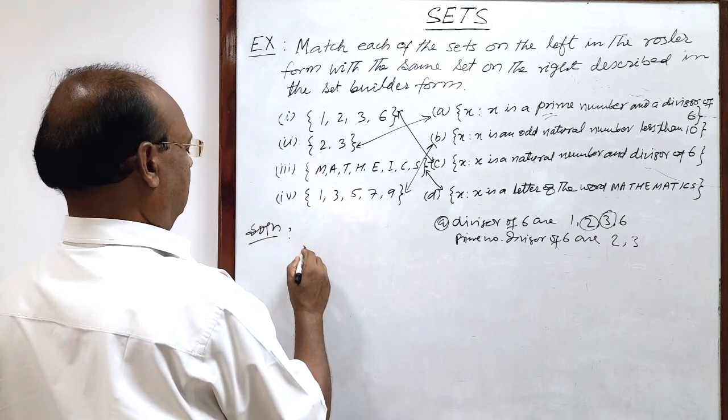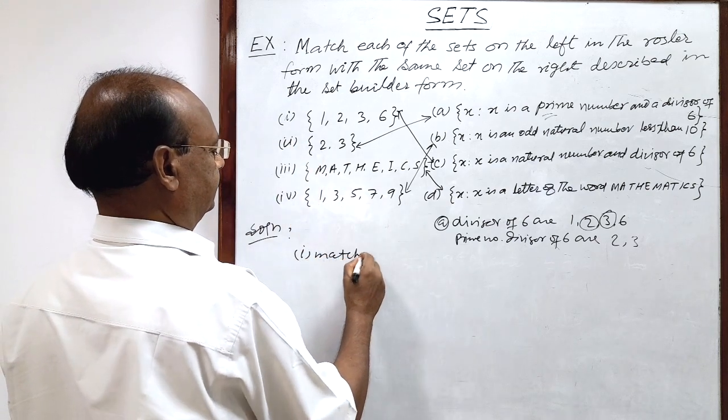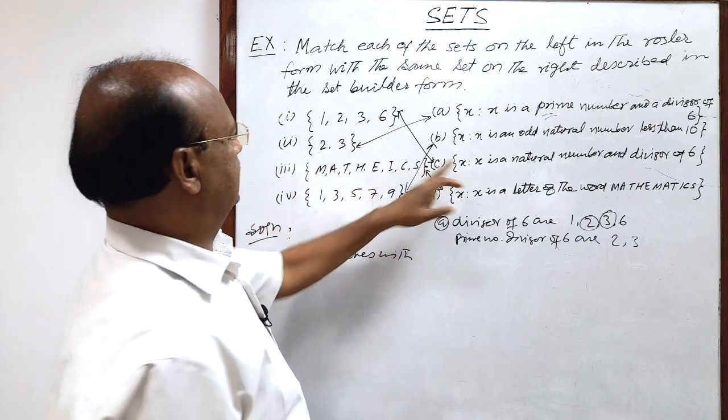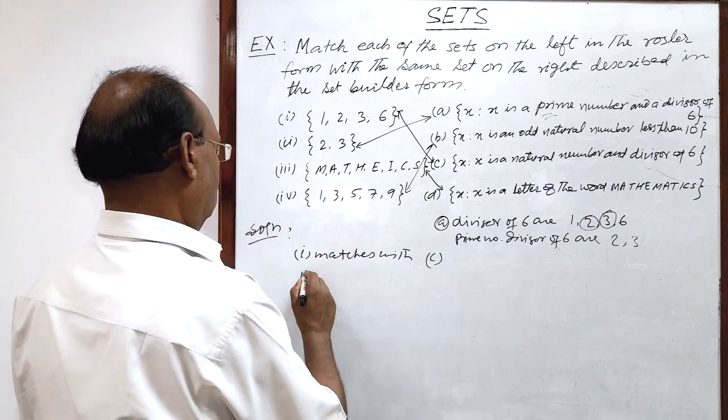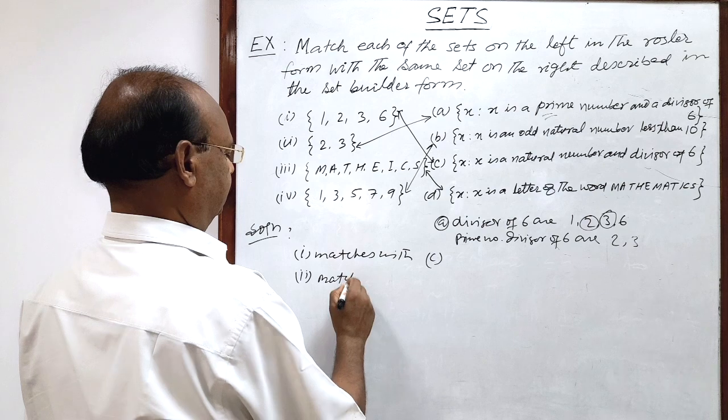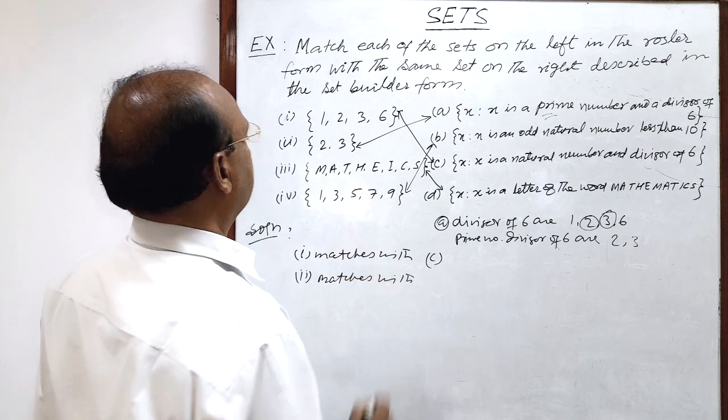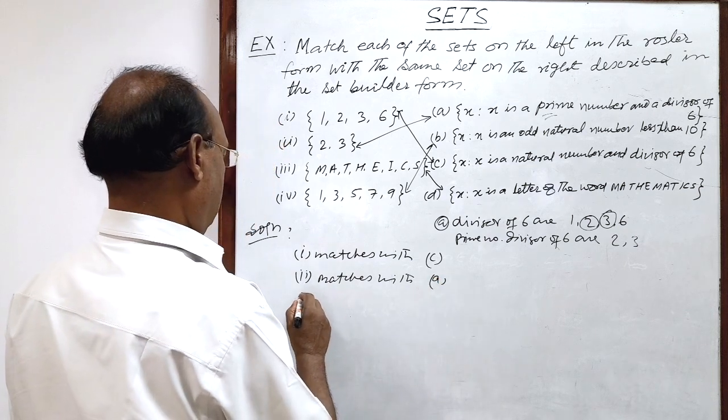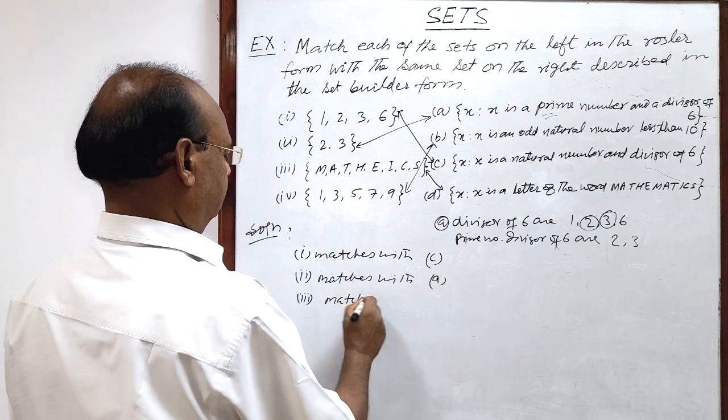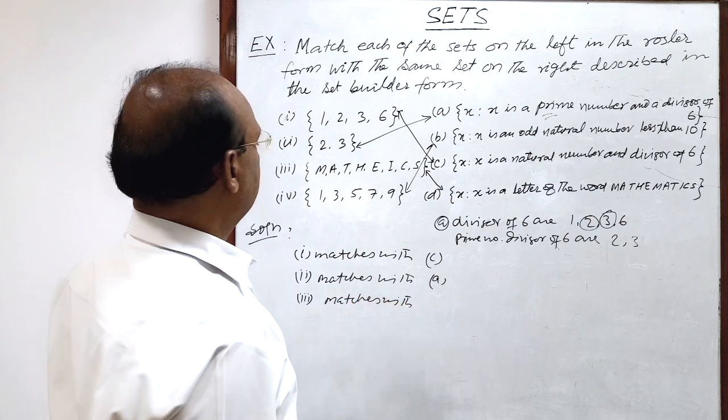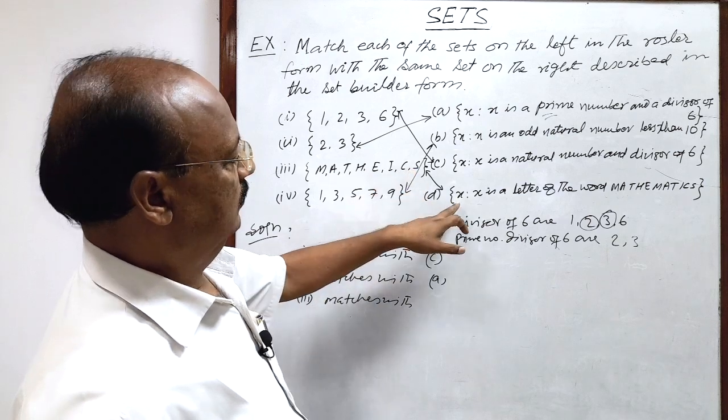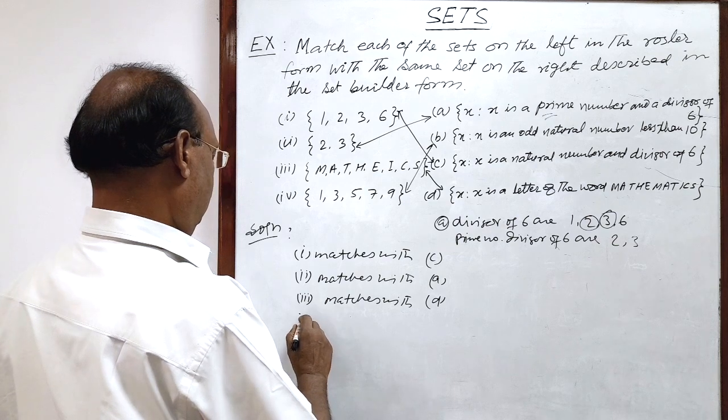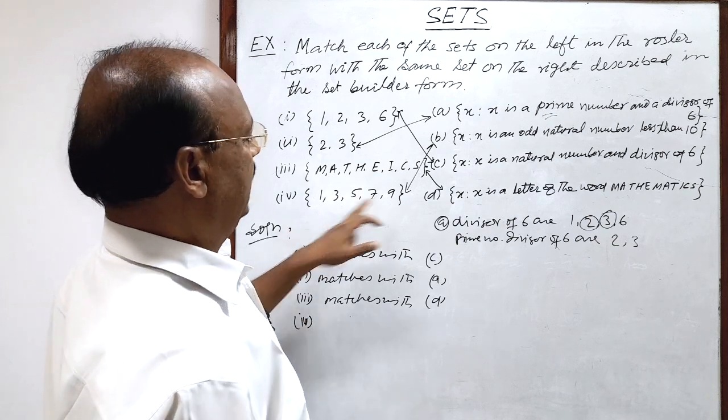So here set 1 matches with C, 2, 3 matches with A, 3, 3 matches with D and 4, 3 matches with D and 4, 3 matches with B.